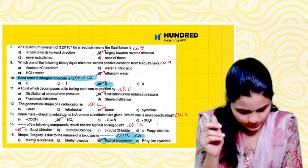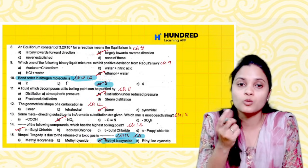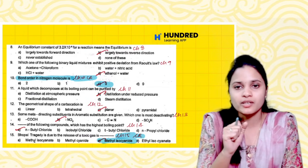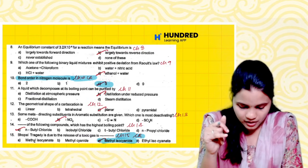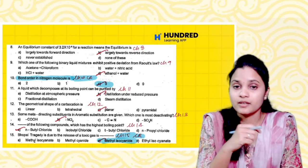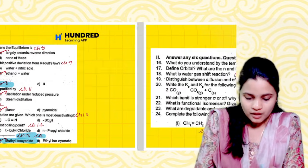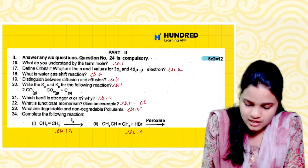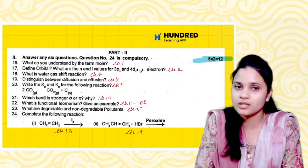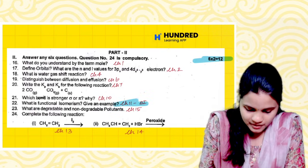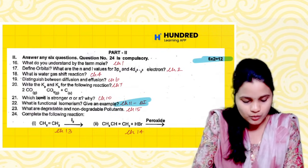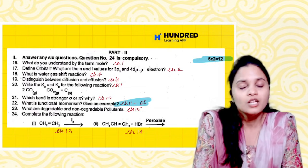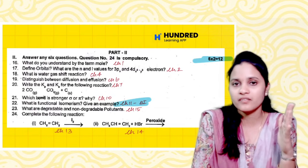Yes, this is the Bhopal tragedy. The Bhopal tragedy is due to the release of a toxic gas. The answer is methyl isocyanide. Next, we will have two more questions. We will have a creative question from chapter 11 — book interior questions. What is functional isomerism? Give an example. This is a question from chapter 11.